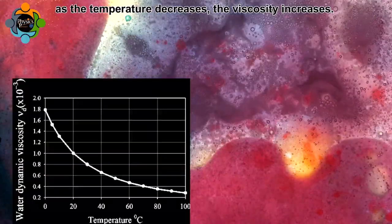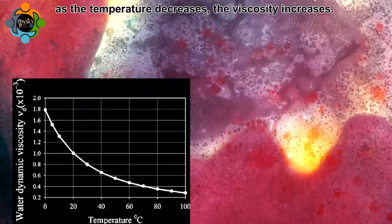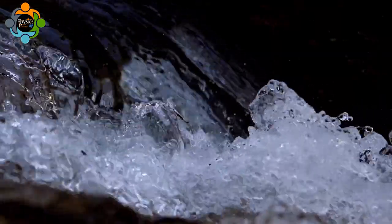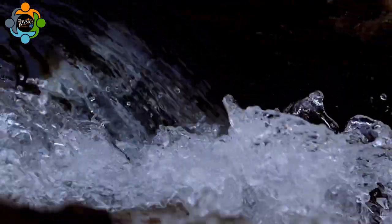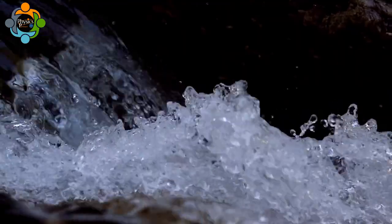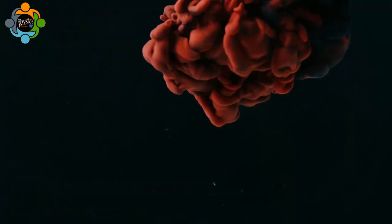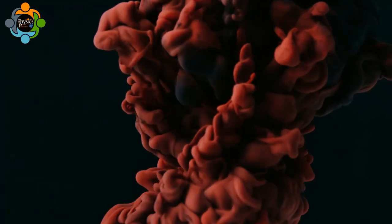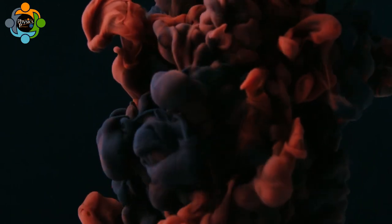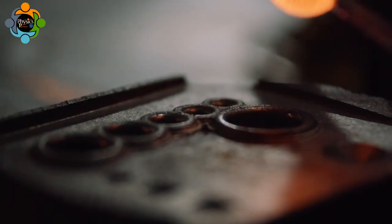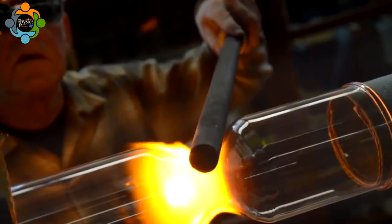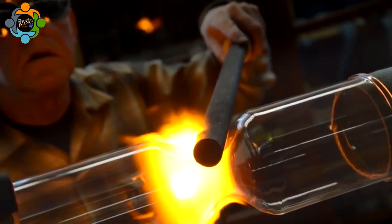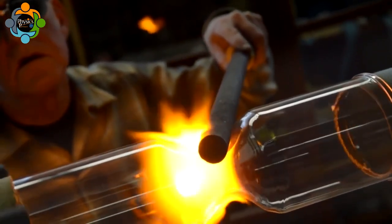For example, the viscosity of water changes with temperature — as temperature decreases, the viscosity increases. Viscosity is important because the relationship between viscosity and the force required to move a fluid helps us understand various physical phenomena, such as the dynamics of fluids in motion and their resistance to deformation. For instance, a highly viscous fluid such as molten glass can resist deformation, which is useful in forming glass structures like bottles and vases.